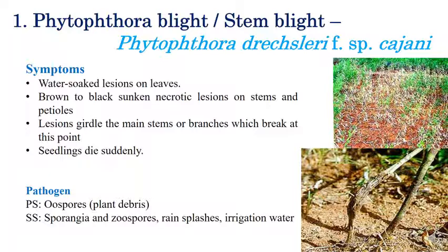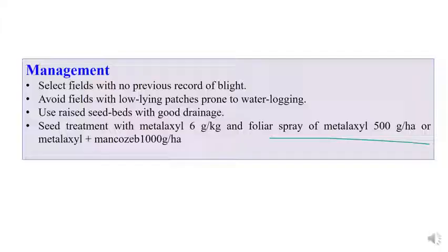The first disease is Phytophthora blight or stem blight caused by Phytophthora drechsleri f.sp. cajani. The name itself indicates stem blight — symptoms are mostly seen on the stem. In the field, wilting of leaves is mainly observed. Water-soaked lesions can be seen on leaves and sunken necrotic lesions on stems. The branches become weak, brittle, and break down. Sudden wilting of plants can also be observed. The pathogen produces oospores as sexual spores and sporangia/zoospores as asexual spores.